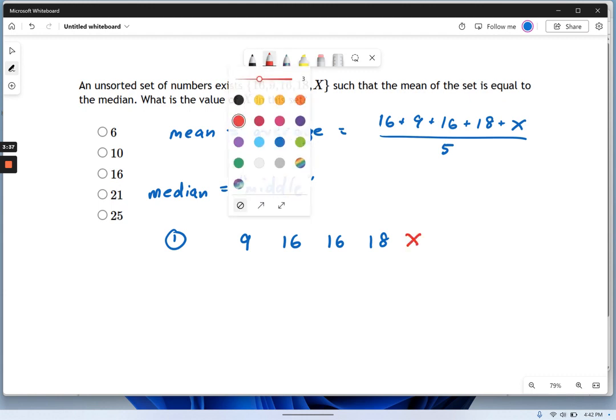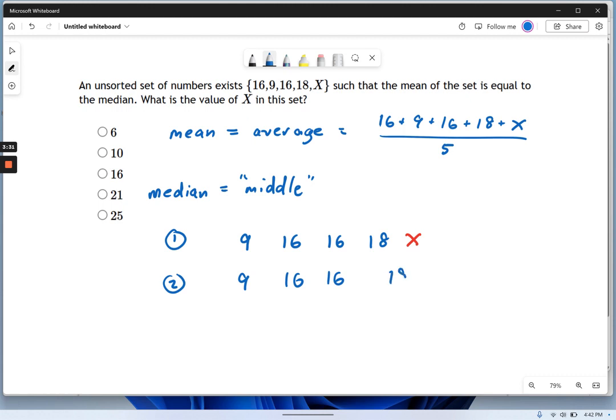Let's make another possibility here: 9, 16, 16, and this time we'll put x in between. So maybe x is 17. So I've got x equals 19 or x equals 17. In either case, where's the middle? It's 16. It didn't matter whether x was 17 or 19.